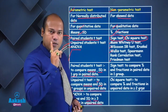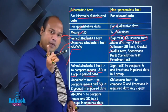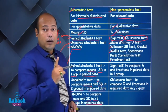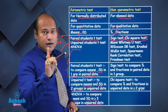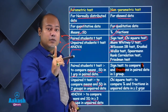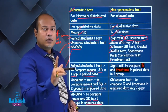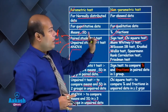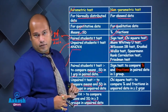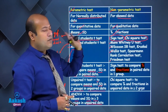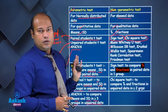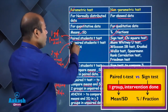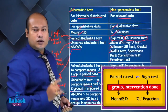For the sign test: it is again paired data, one group, but you are not comparing mean and standard deviation — you compare in terms of percentage, fraction, or proportion, because it is used for skewed data and qualitative data. So basically, the sign test is analogous to the paired student t-test.